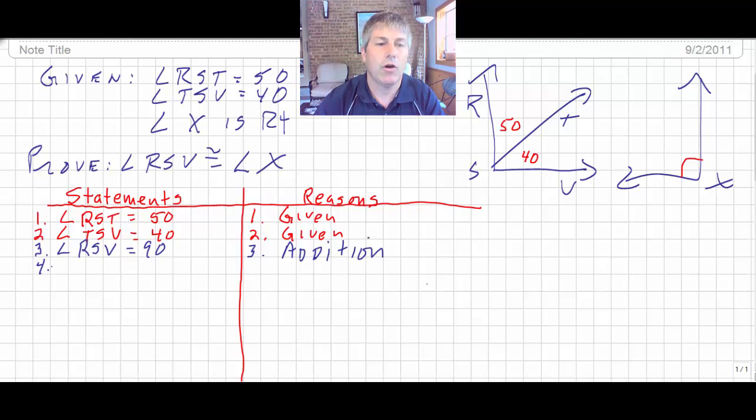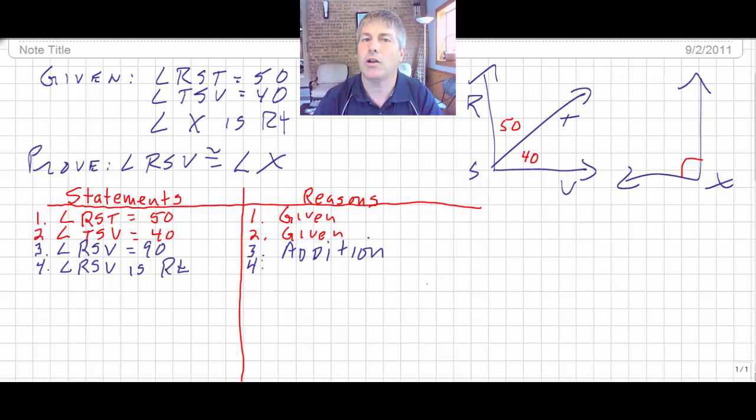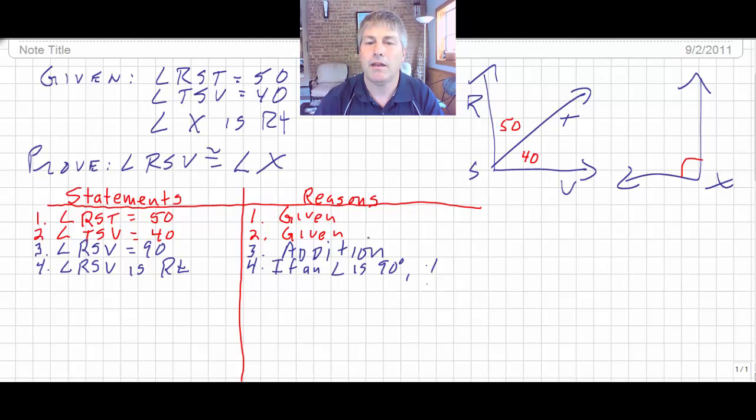And then I also know that angle RSV is a right angle. I need to get these to be the same. Either I need to get this right angle back to 90 or I need to get this 90 to become right, so my language is consistent. So I'm going to say angle RSV is right. Well, why is it right? How do you know that? Let's think about our if-then. If what, then what? Well, if an angle, any angle, not RSV, but any angle is 90 degrees, then it is right.